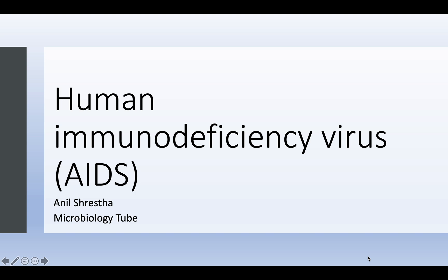Today we are going to discuss the human immunodeficiency virus. HIV is a virus responsible for inhibiting the CD4 cells of the human body. The CD4 cells are usually responsible for helping the B cells in the synthesis of antibody. So when our body lacks CD4 cells, the B cells cannot get help, which is why antibody levels in our body decrease.